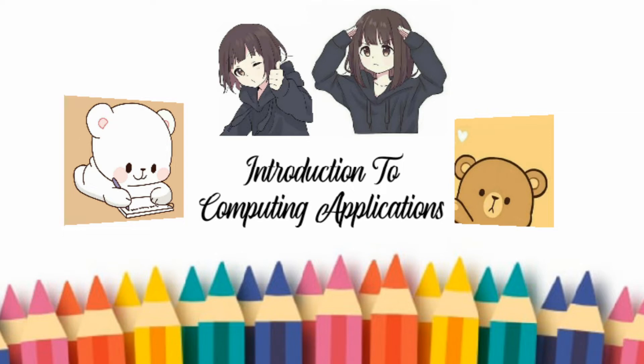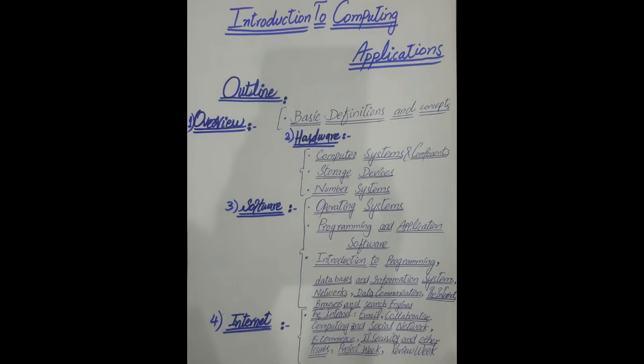We will put the files in the outline. The outline covers basic definitions and concepts, then hardware, computer systems and components, storage devices, number systems. Then we will talk about software and software management, operating systems, programming and application software, and introduction to programming.